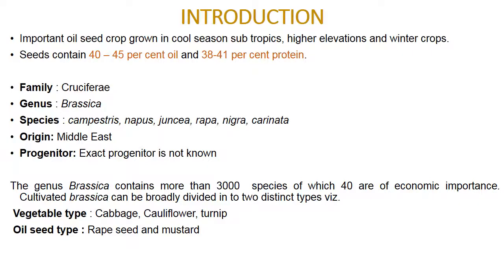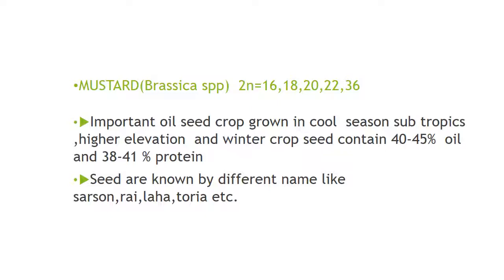The important species are campestris, napus, juncea, rapa, nigra, and carinata. The origin is the Middle East, though the exact progenitor is not known. The genus Brassica contains more than 3,000 species, of which 40 are of economic importance. Cultivated Brassica can be broadly divided into two distinct types: vegetable type and oilseed type. In vegetable type, cabbage, cauliflower, and turnip are important; in oilseed type, rapeseed and mustard. The chromosome number varies from 16 to 36.